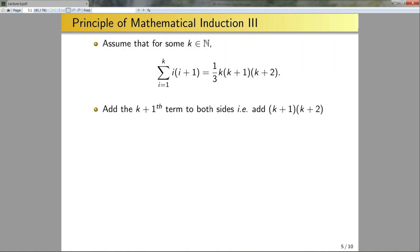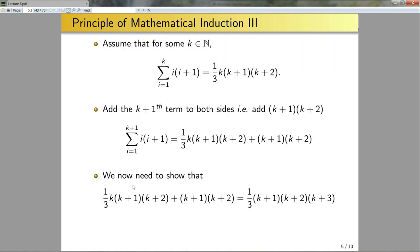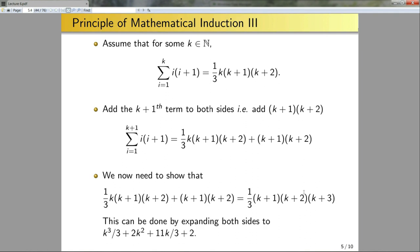Now I need to do some algebra to show that the right-hand side expression simplifies to the desired form. There are multiple ways — I could algebraically manipulate one side to match the other, or simply expand both sides by multiplying everything out. Expanding both sides, I find that both equal the same polynomial, which proves the statement I wished to show.